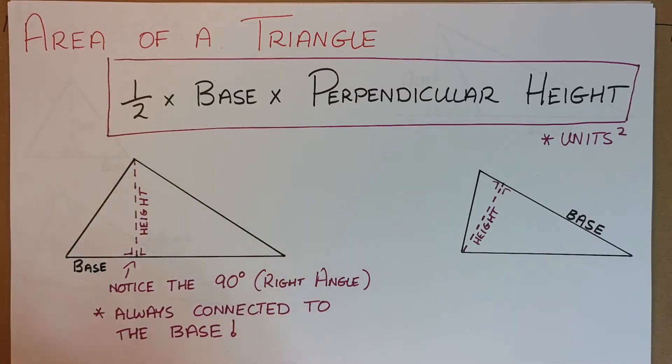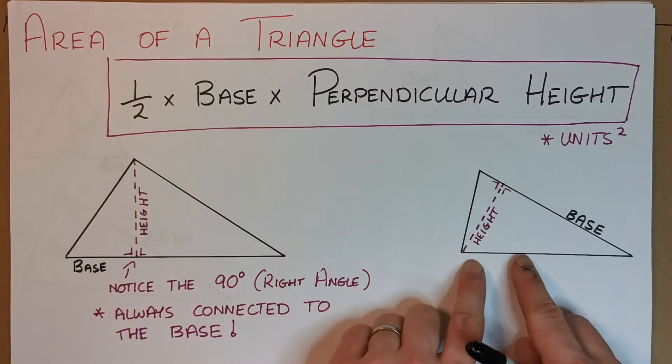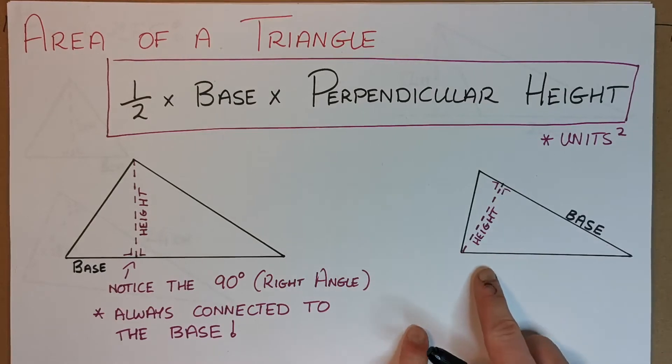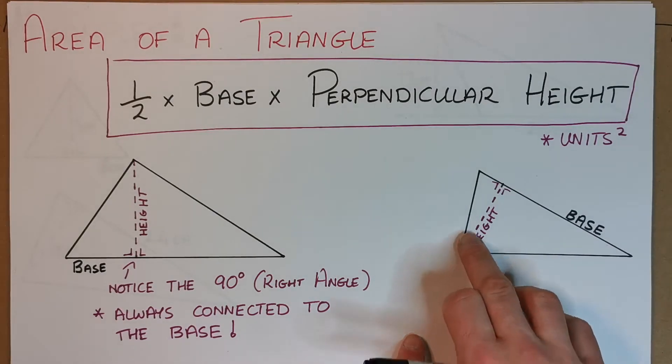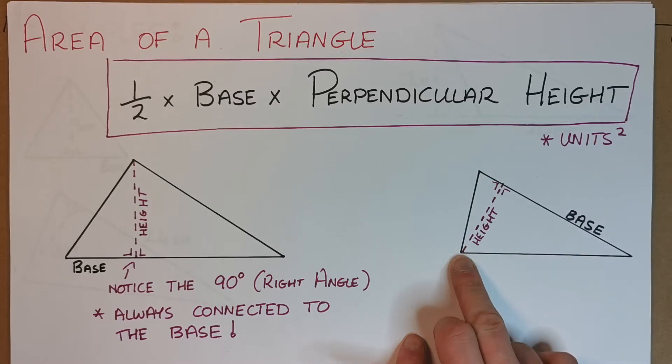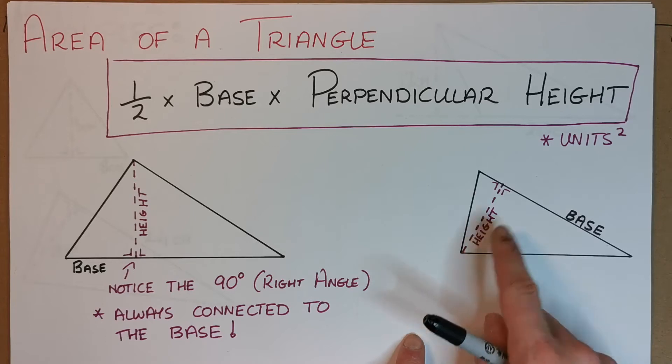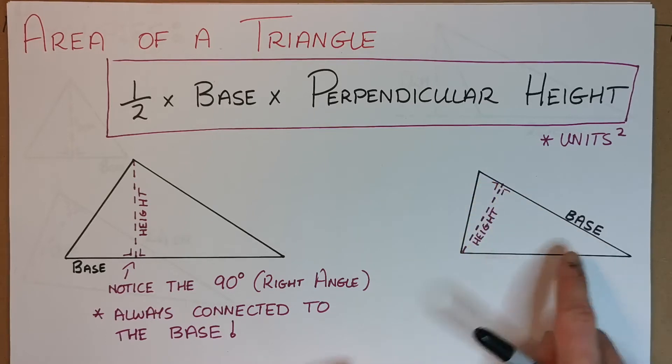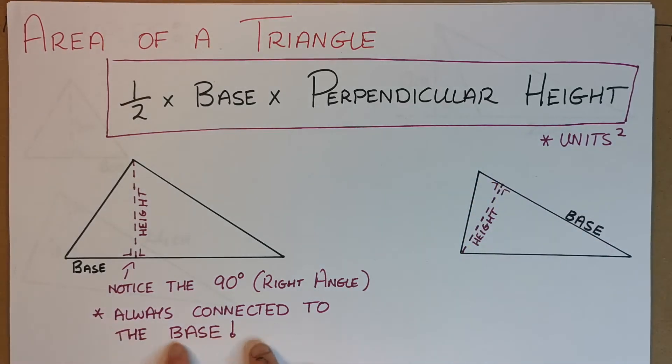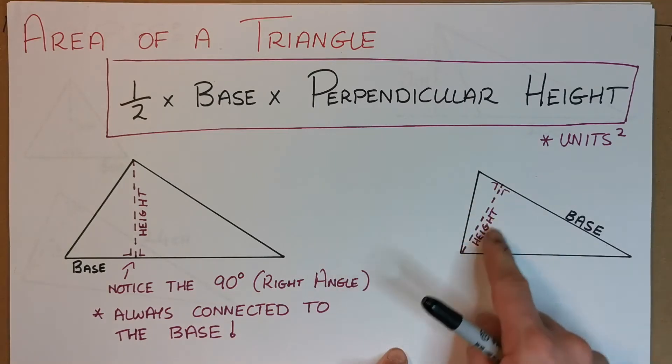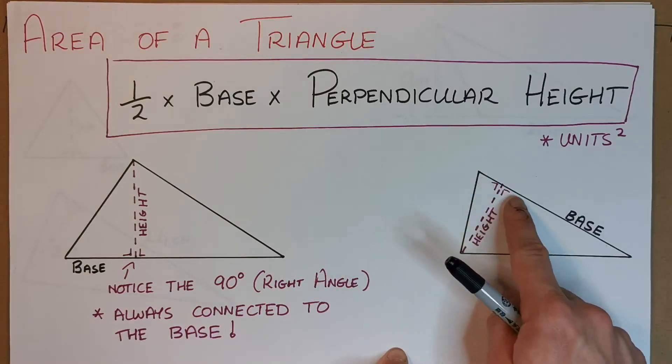The most important thing here is you take the perpendicular height. For instance, in this triangle here it might be very tempting to say because the triangle is orientated this way, this must be the base. But because we are given a perpendicular height coming from this line here, we must take this as the base. Remember, always connected to the base or height line.